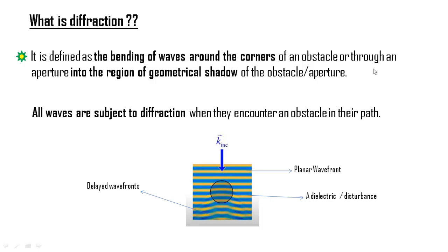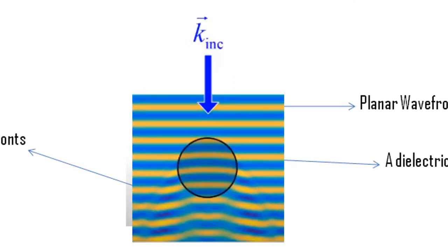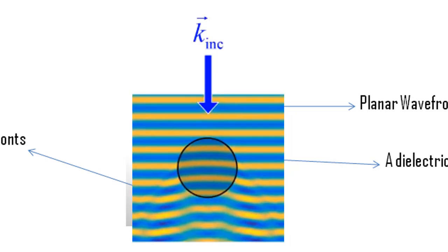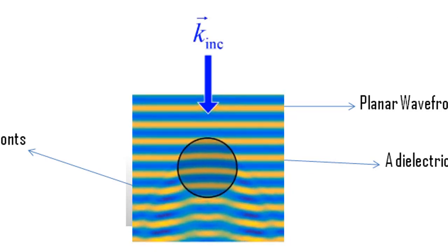The phenomenon of diffraction is native to all the waves. This animation is a FDTD, also called the Finite Difference Time Domain simulation of a plane wave incident on a circular dielectric. We can see that the parts of the wavefront are getting delayed after hitting the obstacle.